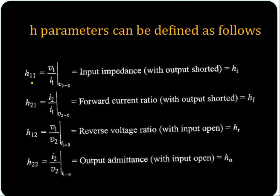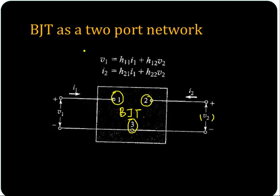H11 will be equal to V1 by I1 if V2 equals 0. Similarly, H12 will be equal to V1 by V2 if I1 equals 0. That is how the H parameters are defined.